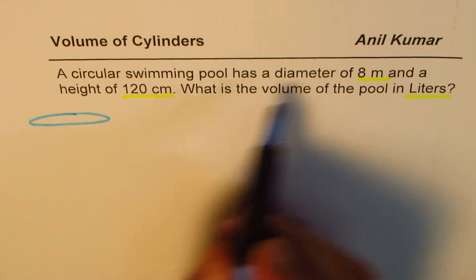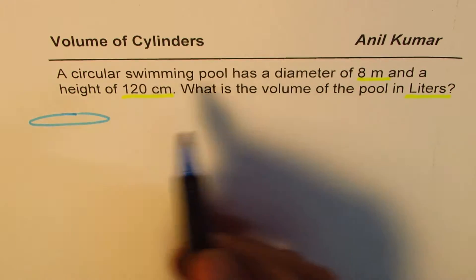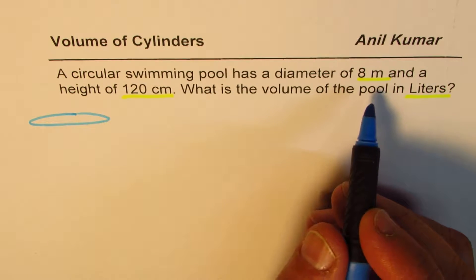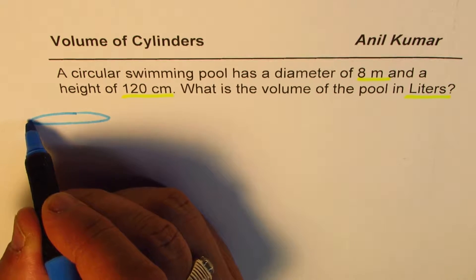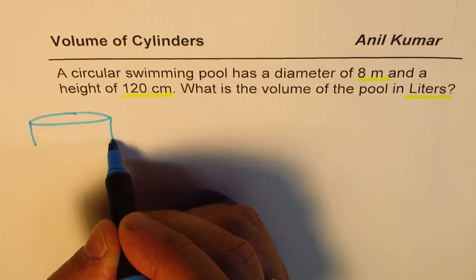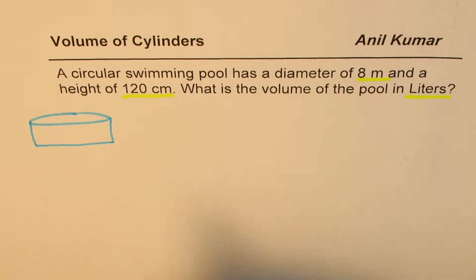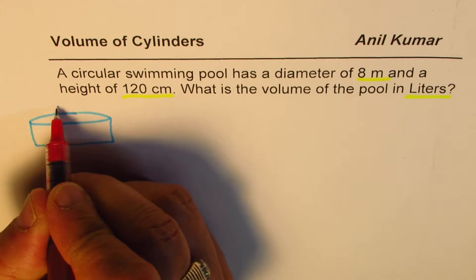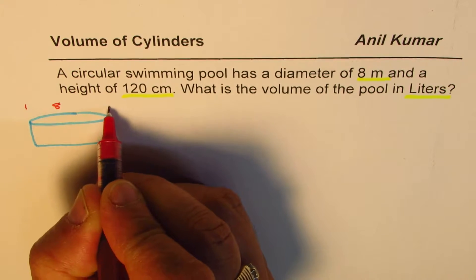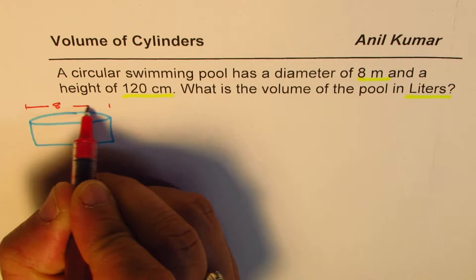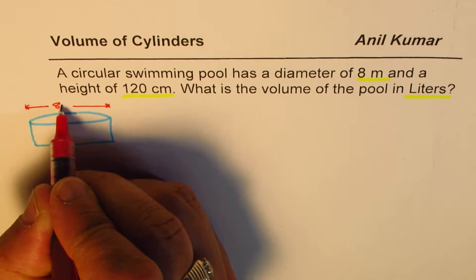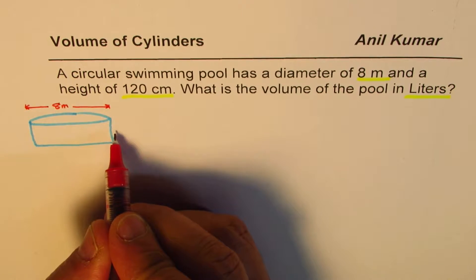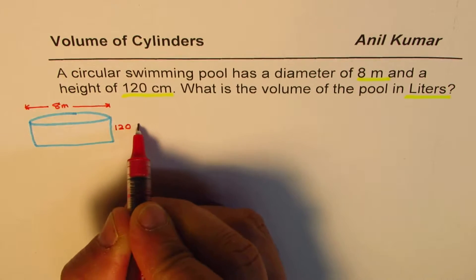8 meters is quite large — it is wider than the width of the table by 8 times. So it is 8 meters wide and just 120 centimeters in height. That 120 centimeters is kind of 1 meter — 1.2 meters to be precise. So 8 meters is the diameter, from one end to the other of the circle. And the height is given to us as 120 centimeters.